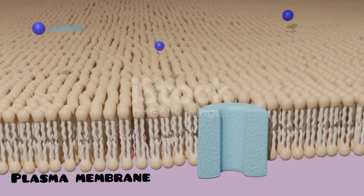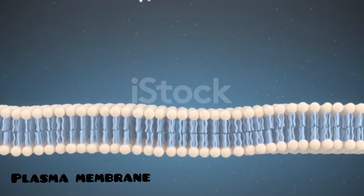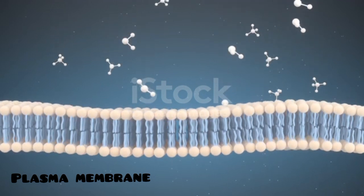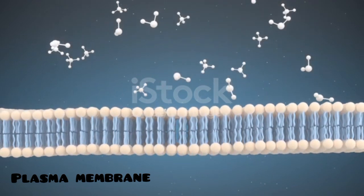The plasma membrane, also known as the cell membrane, is a crucial structure that surrounds the cell's cytoplasm, separating it from the external environment. Here are some key points about the plasma membrane.